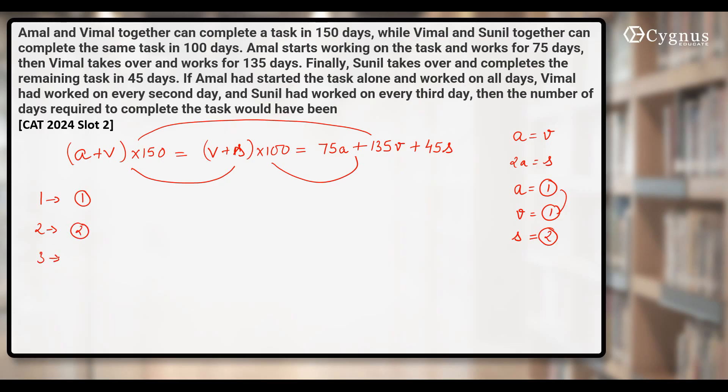Third day, Amal will be working with Sunil because Sunil works on every third day. So their combined work will become one plus two. That is three units per day. Fourth day, Amal will be working with whom? Vimal, because Vimal works on every second day. So again, their contribution will become how much? Two units. Fifth day, Amal will be working alone. So he'll do how much work? Only one. Sixth day, Amal, Vimal, and Sunil, all of them will be working. So the total contribution of all three of them together will become four units.